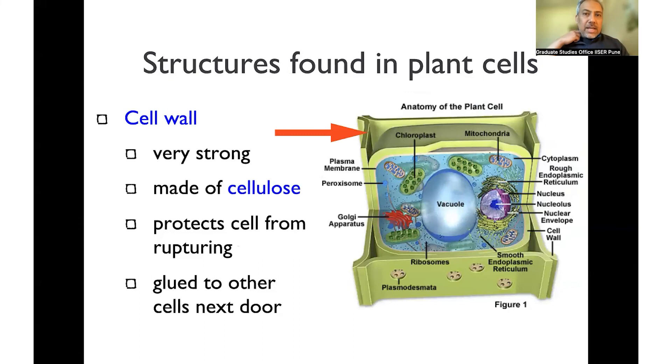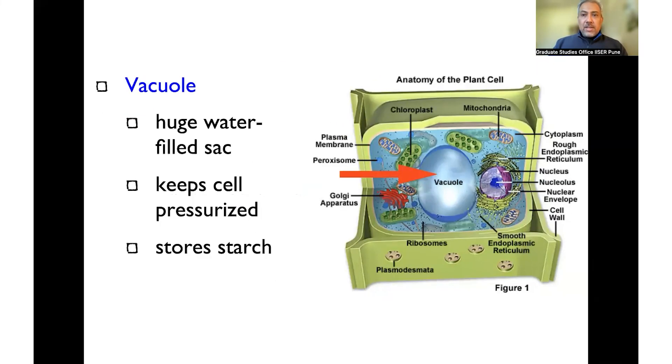And along with this, there are distinct structures that are found in the plant cell as well. Along with the cell membrane, the plant cell has a cell wall that is made up of cellulose, which adds an important layer of protection and structure to the plant cell, which is distinctly different from animal cells. Plant cells also have this big vacuole which stores water and plays an important role, and stores starch as well and plays an important role in keeping the cell pressurized, which is again a big distinction between animal cells and plant cells.